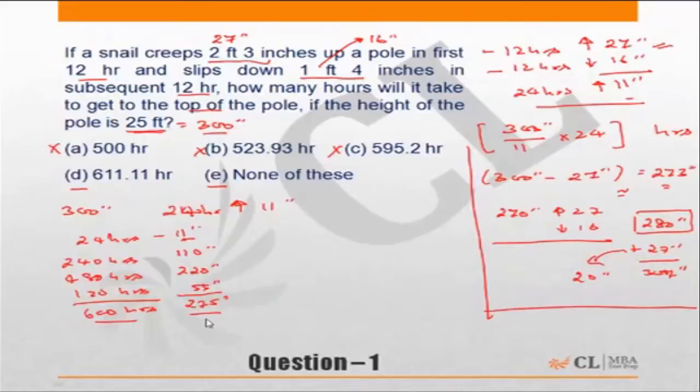What is the extra distance to be covered? Out of 300 inches, 275 inches have been covered, so there's a balance of 25 inches to be covered. Now in the next 12 hours, the snail can go up by 27 inches, but we want him to go up only by 25 inches. So the time taken should be 25 by 27 into 12.